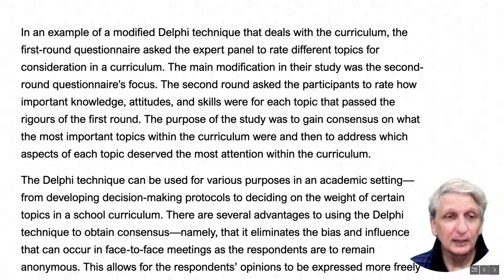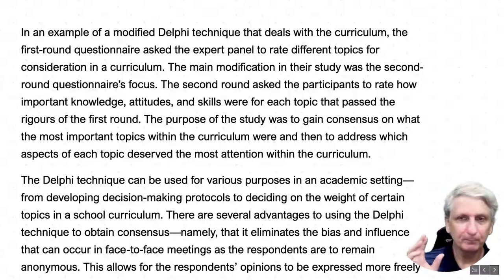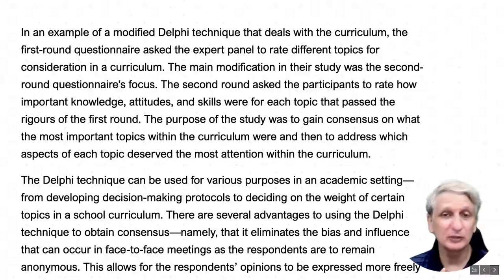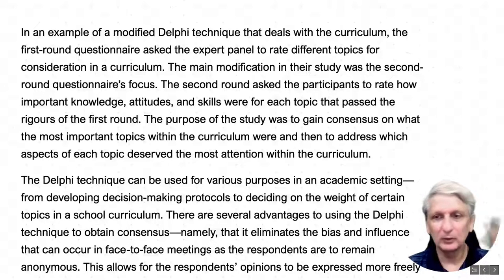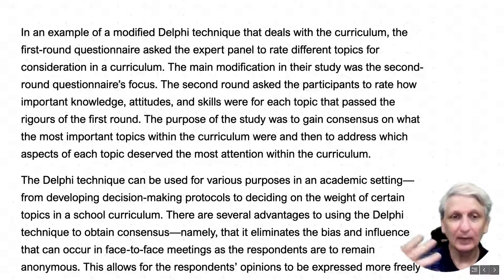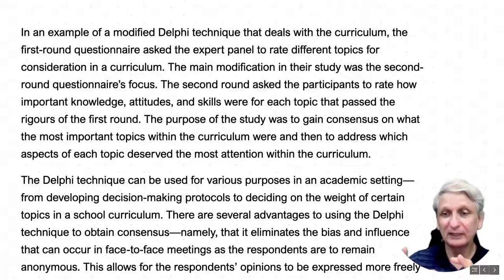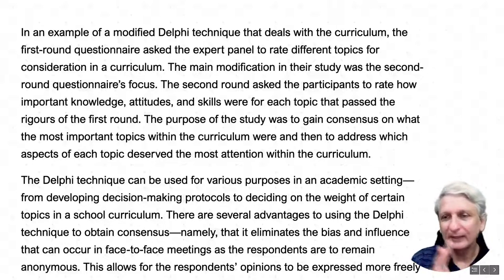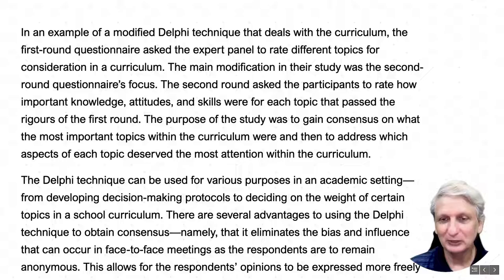As an example of a modified Delphi for curriculum issues: the first round might ask how much discretionary time to allocate to different subjects — say 20 hours for maths, 15 for English, 10 for technology, and 5 for geography. The second round then introduces a new question about what knowledge, attitudes, and skills will be achieved from that mix of allocations. This effectively runs two Delphi studies in one, illustrating the many modifications that can be applied to the Delphi technique.